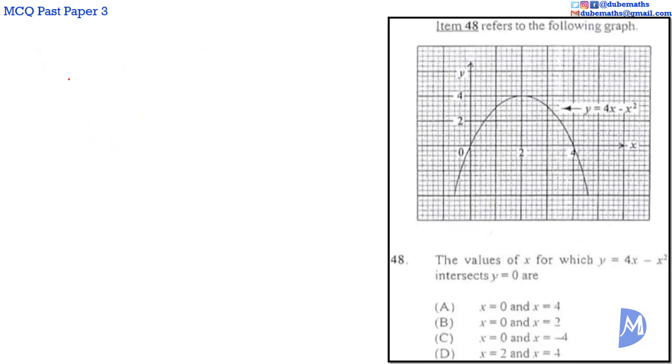Question 48. The graph of y equals 0 lies on the x-axis. Thus, we are looking for the x-values of the two points where the graph of y equals 4x minus x squared intersects or cuts the x-axis.